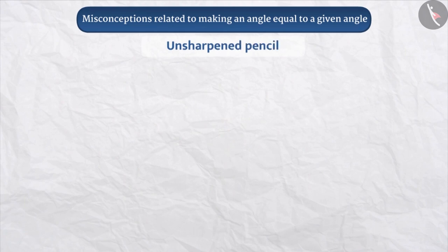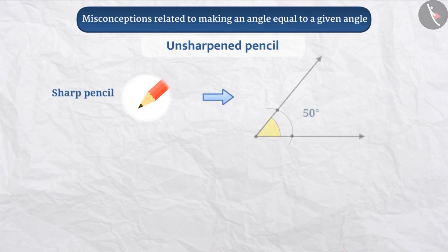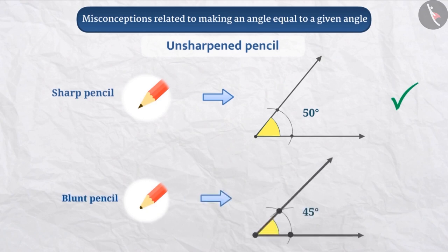Unsharpened pencil: It is necessary to use a pointed pencil to create any angle. If the pencil is not pointed or blunt, then the points and lines become thick, which increases the likelihood of the angle being wrongly measured. At the same time, neatness is not found in such an angle.